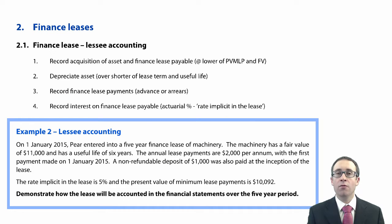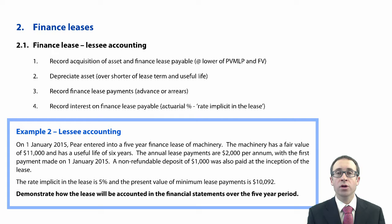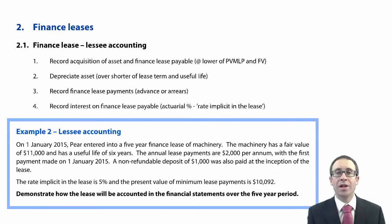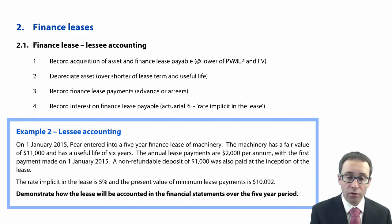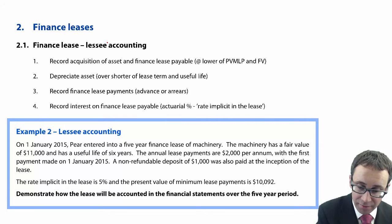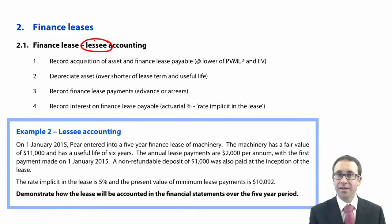Let's now have a look at finance leases. When we have a finance lease it's the lessee — the person using the asset — who bears the substantial risks and rewards of using that asset. So the risks and rewards have transferred from the lessor to the lessee; the person using the asset has those risks and rewards of ownership. We're going to look at finance leases first of all from the lessee's perspective — the person who is using the asset.